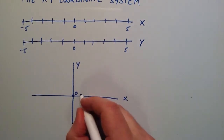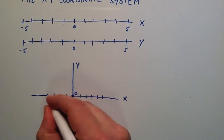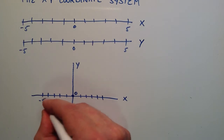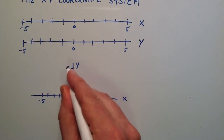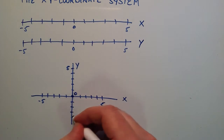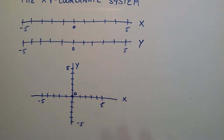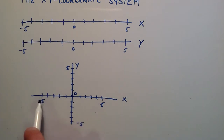We have 1, 2, 3, 4, and 5 on the x, and negative 1 through negative 5 on the x as well. The y goes 1, 2, 3, 4, 5 in the positive direction, and negative 1 through negative 5 going down. When we have an x-y coordinate system, instead of calling these number lines, we just change the name — we say these are now the x axis and the y axis. But really, the x and y axes are just number lines.